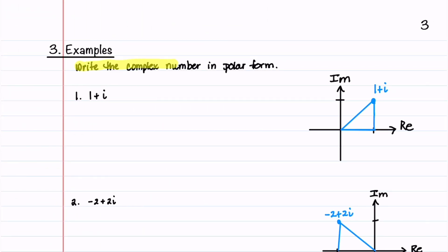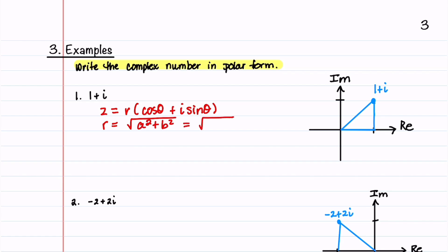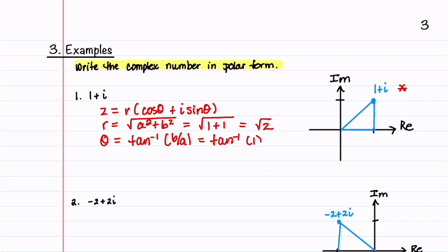In all three problems we'll write the complex number in polar form. We begin by writing z equals r times cosine theta plus i sine theta. R equals the square root of a squared plus b squared, which is the square root of 1 plus 1, giving root 2. We notice our number is in the first quadrant, so theta equals the inverse tan of b divided by a, which is the inverse tan of 1, equal to pi over 4. This gives us z equals root 2 times the quantity cosine pi over 4 plus i sine pi over 4.